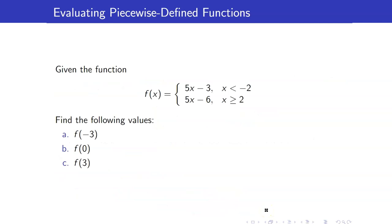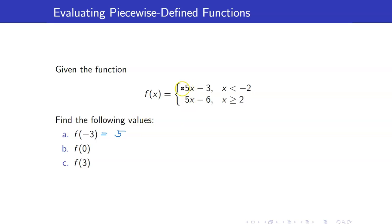Let us have another example. We are given f of x equals 5x minus 3 if x is less than negative 2, and 5x minus 6 if x is greater than or equal to 2. To evaluate f of negative 3: negative 3 is less than negative 2, so we use 5x minus 3 and plug in negative 3. That is 5 times negative 3 minus 3, which equals negative 15 minus 3, giving us negative 18.